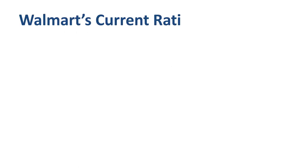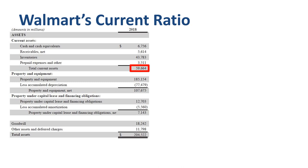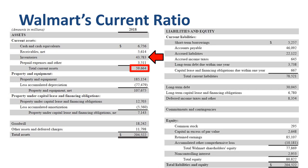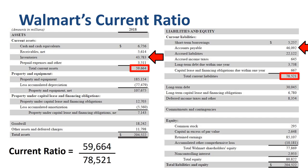Walmart: current assets of $59.7 billion on total assets of $204.5 billion — 29% of assets are current. Within current assets, inventories are the vast majority. On the liabilities side, $78.5 billion of current liabilities, of which more than half is accounts payable. The current ratio is 59.7 divided by 78.5, which equals 0.8 — every dollar of current liabilities is covered by 80 cents of current assets. This is a typical picture for a retail company: manage working capital well by keeping receivables low and inventories below payables.